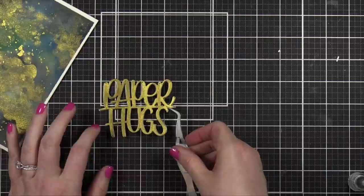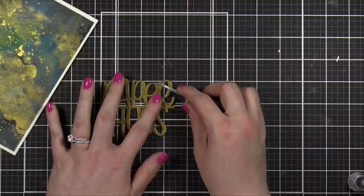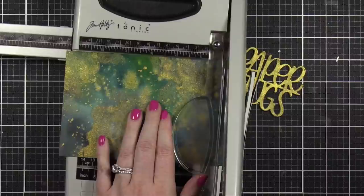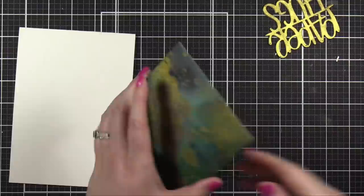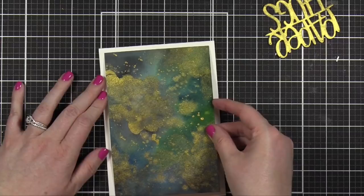So altogether, there are four layers of this die cut, and the top layer is that gold one. I trimmed down the watercolor background so that it is six and a half tall by four and a half wide. This is going to go on a five by seven card base. So that's going to give me a little bit of room on all sides so that I have a nice white frame around my design.